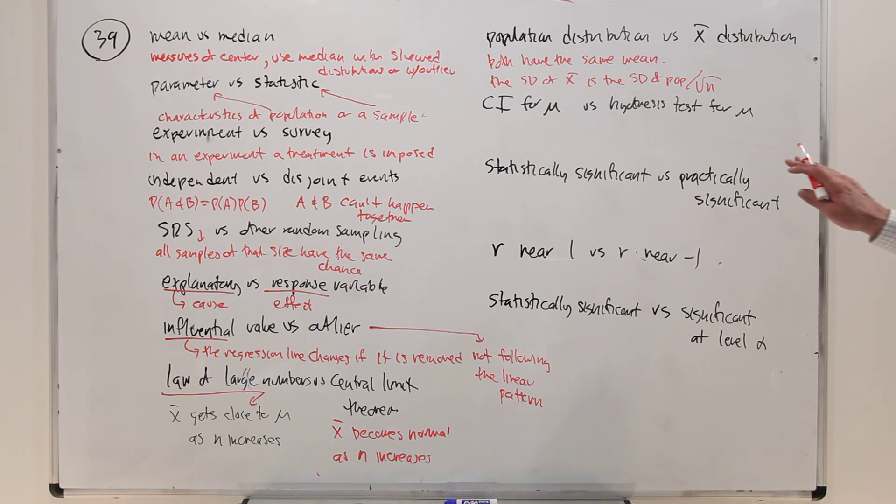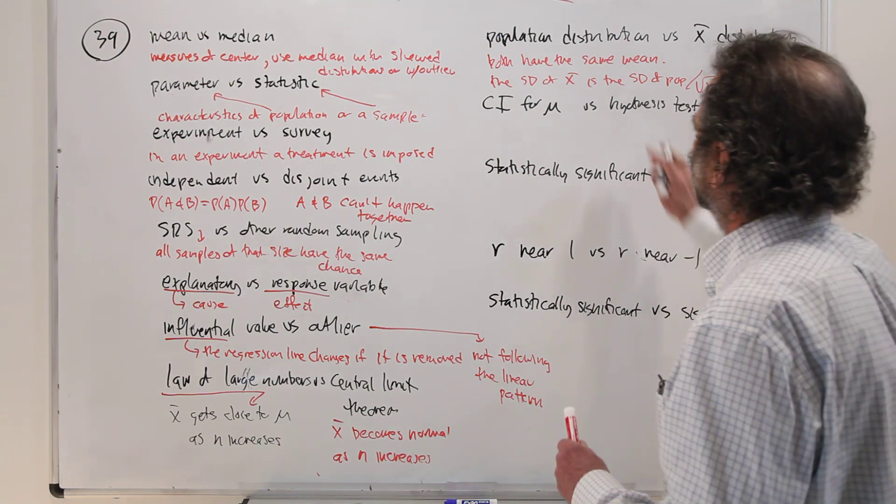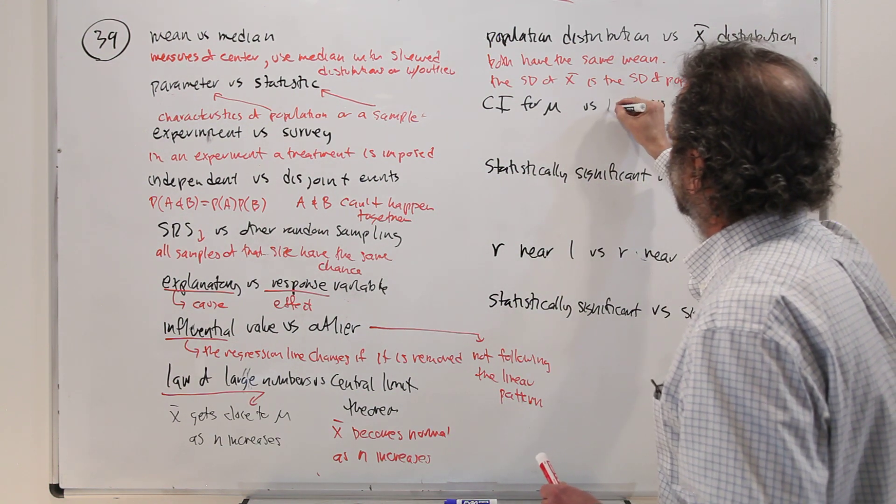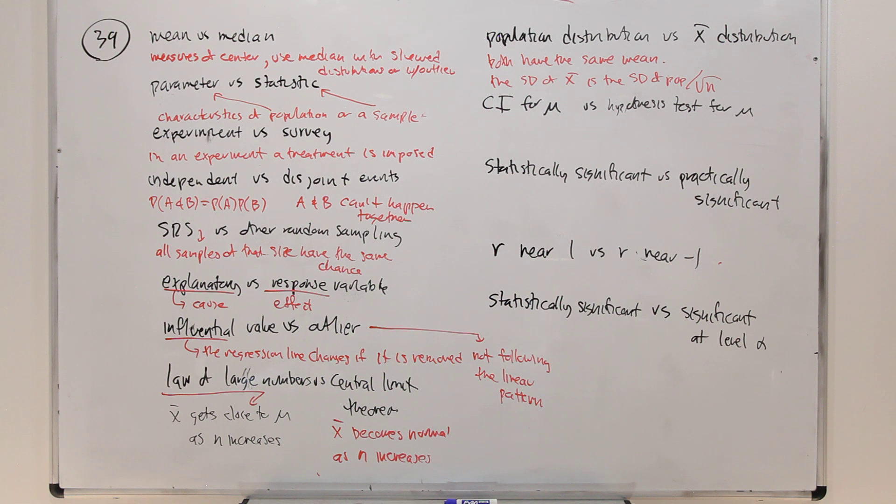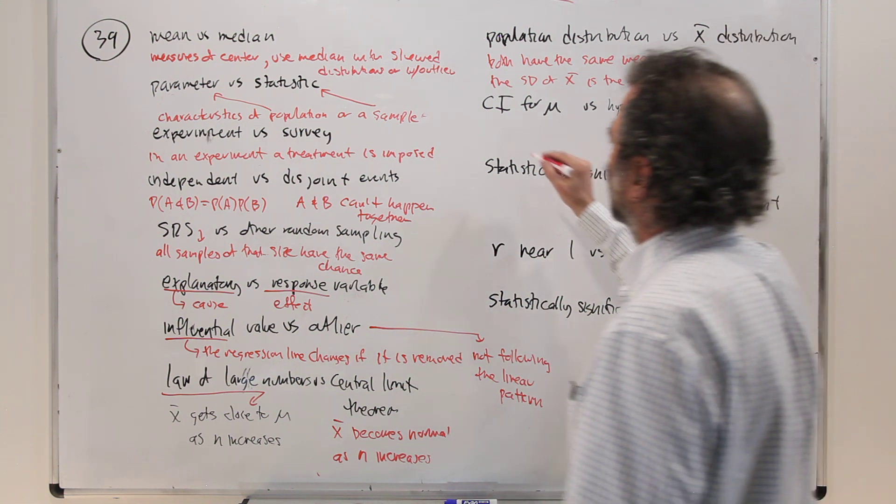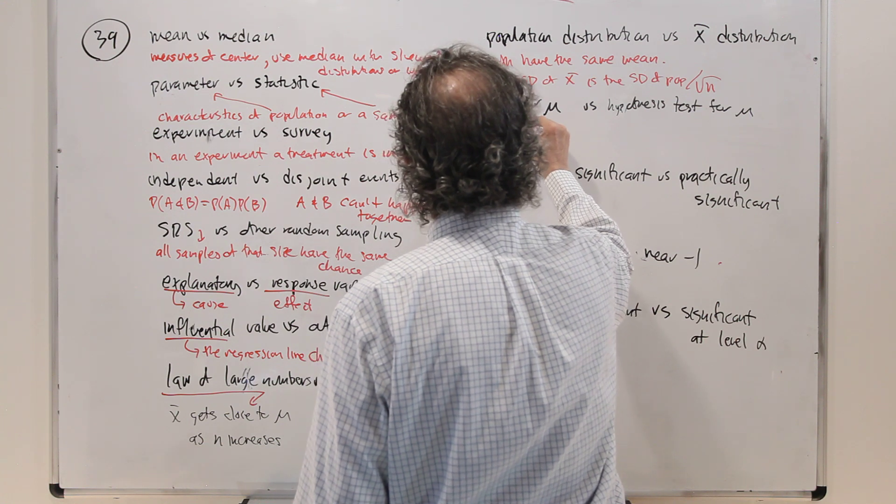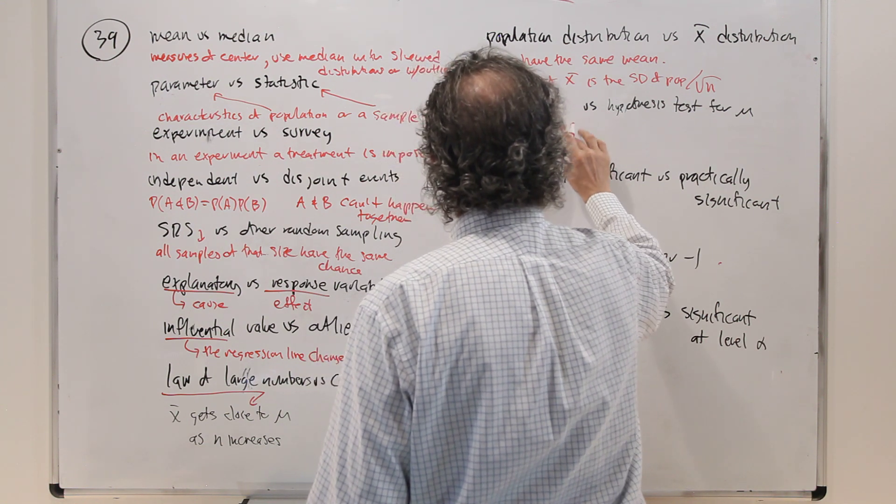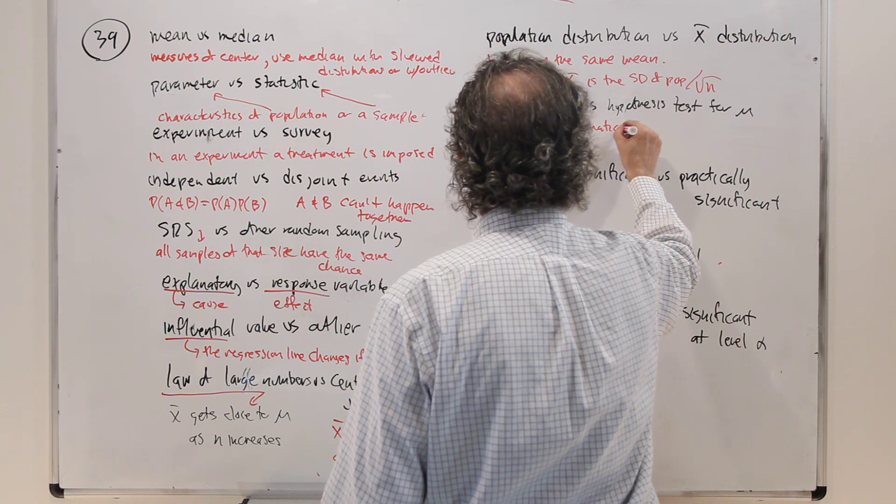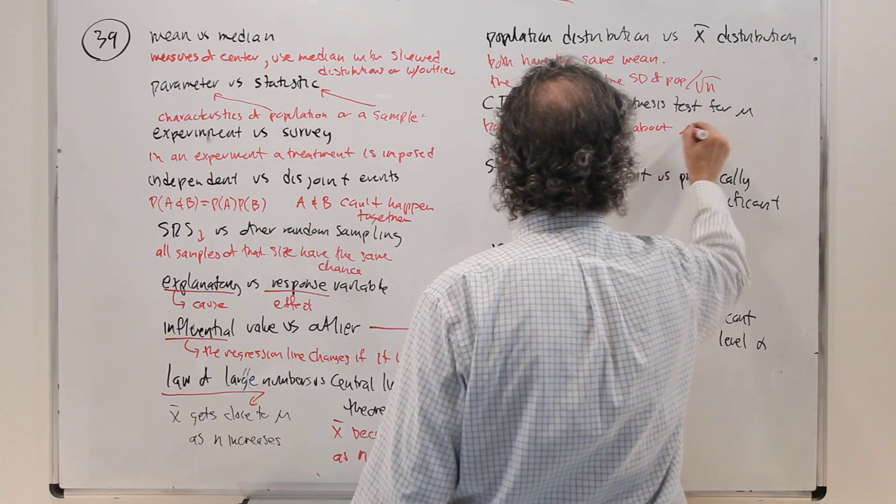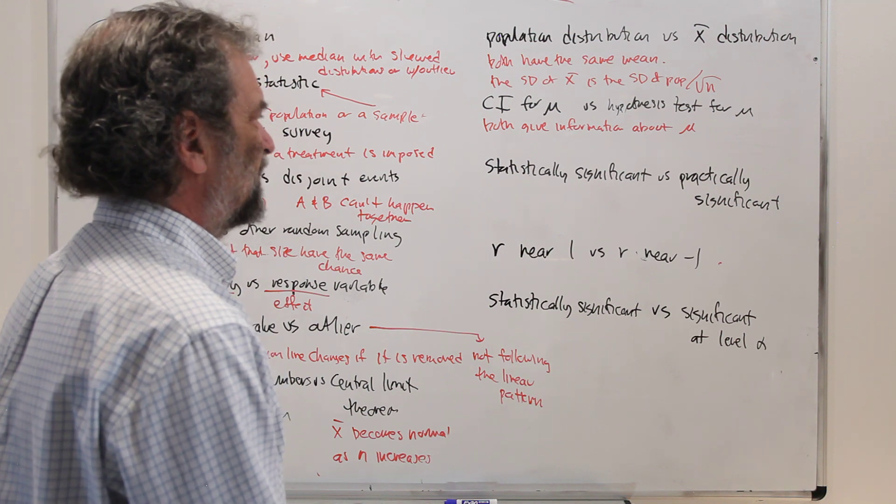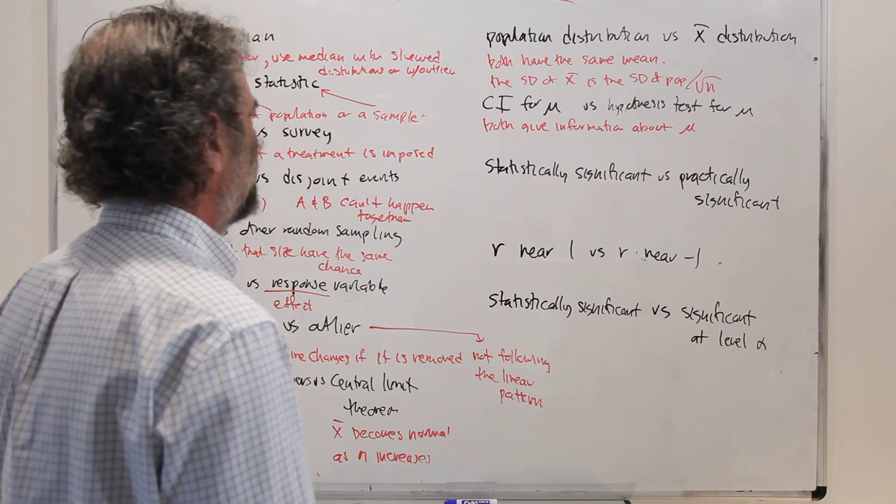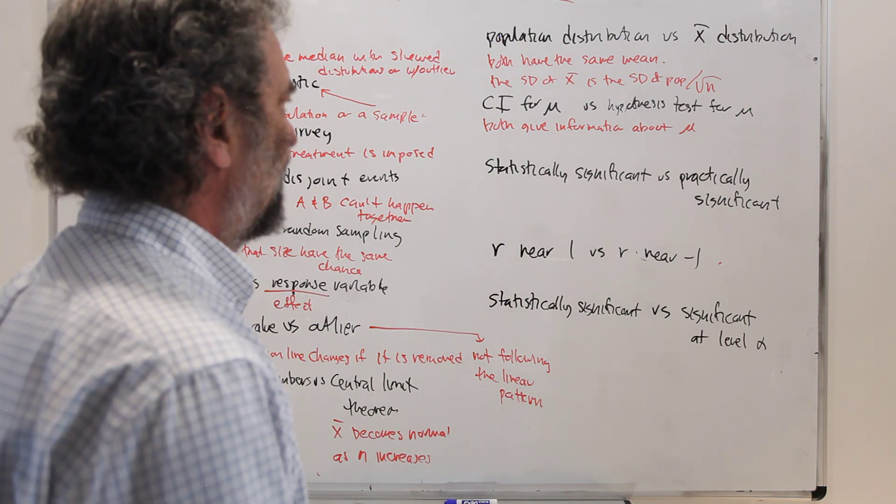Confidence interval for mu versus hypothesis test. They are similar. Both give information about mu. True enough. And they both could tell you whether mu could be a certain number. I'm trying to think, if you want to say compare and contrast, that's a compare where they're the same. How are they different?